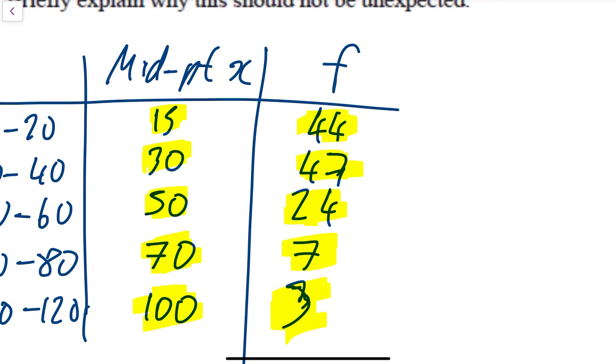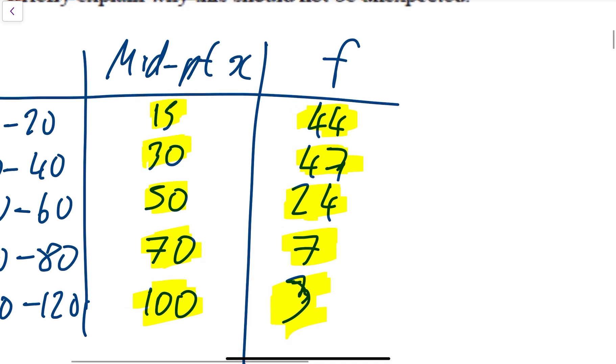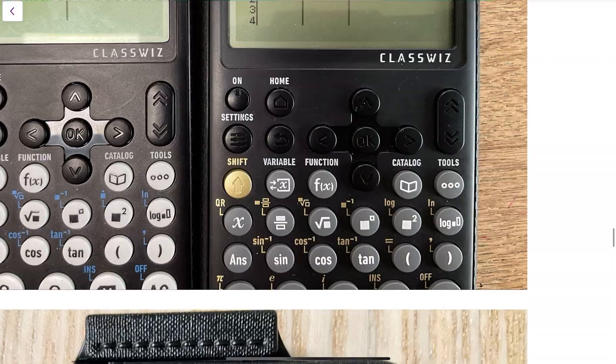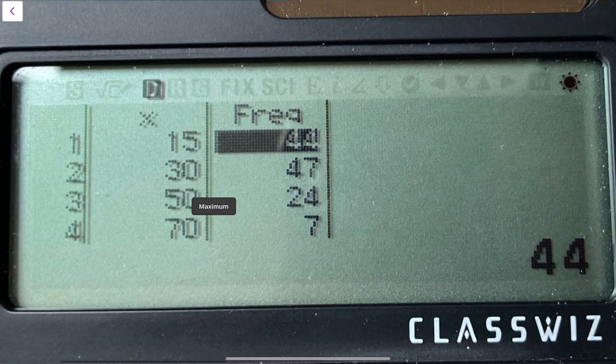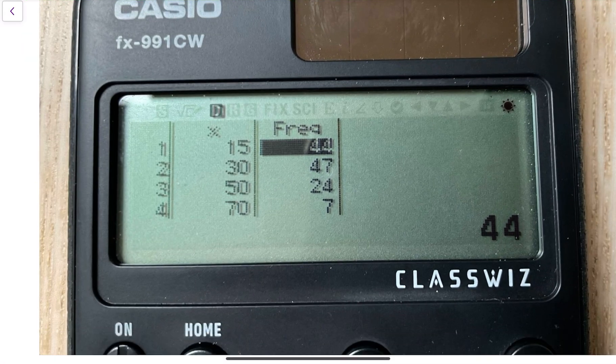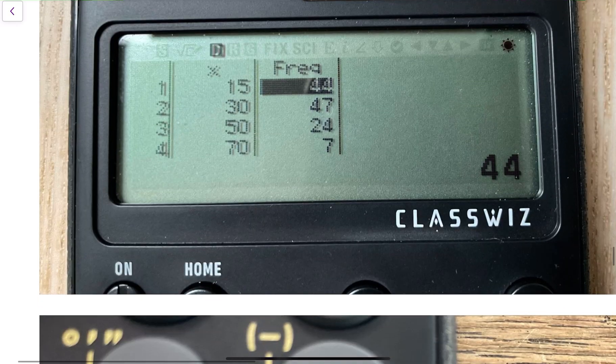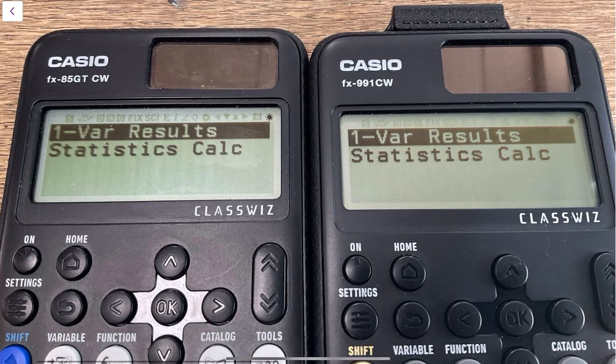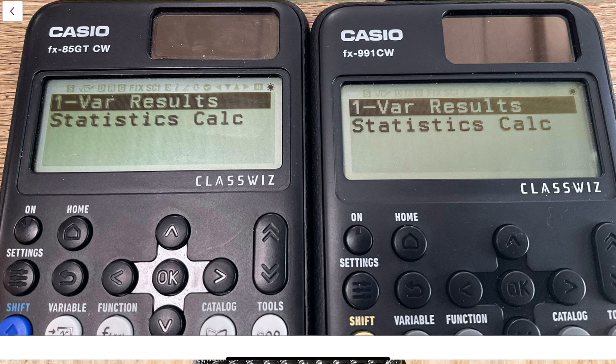Then use your selector to go back up here to the F column and put in 44, hit equals, then 47, hit equals, 24, hit equals, 7, hit equals, and 3, hit equals. So you've got all of your columns in. What your calculator should look like now—it should look like this. If you scroll down you would see the last one.